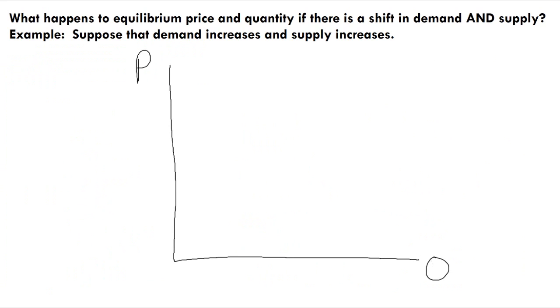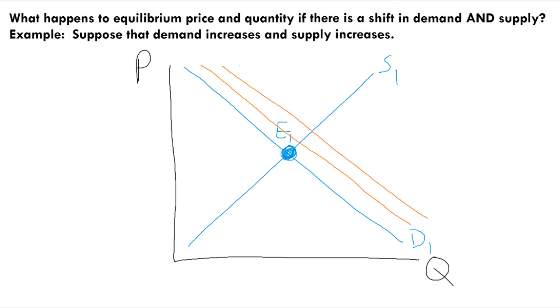Once again, we start with S1 and D1 drawn in blue, noting the equilibrium location, E1. Now in red, let's draw many different possible D2 demand curves. It could be a small shift, medium shift, or large shift.